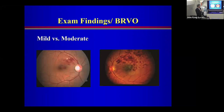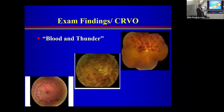Here are photographs of branch retinal vein occlusions — mild on the left and moderate on the right — judged by the amount and size of hemorrhage. One is relatively small but still affects the macula; the other is a bigger vein occlusion. In central retinal vein occlusion, the blood and thunder appearance is more typical of the middle image. The bottom left shows a perfused or mild CRVO: dilated tortuous veins, disc edema, scattered hemorrhages, and cotton-wool spots around the arcades.